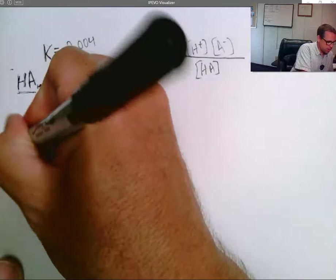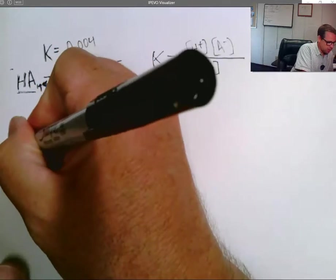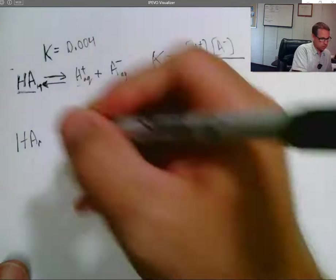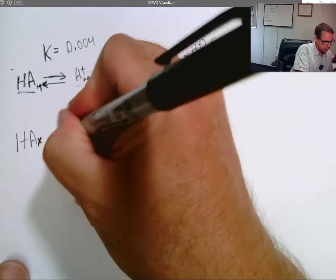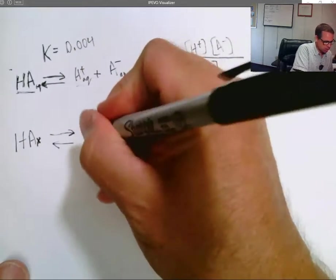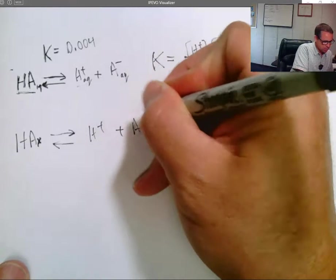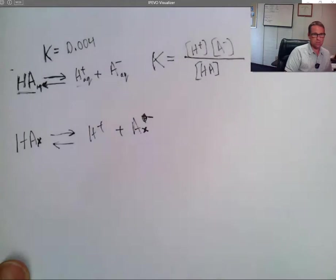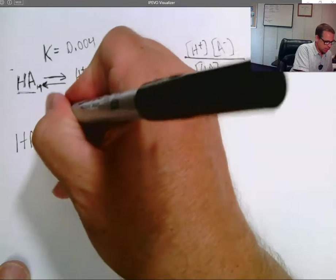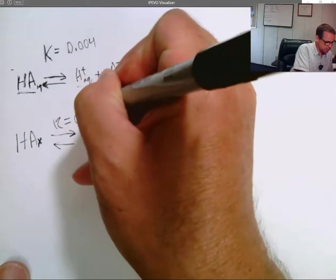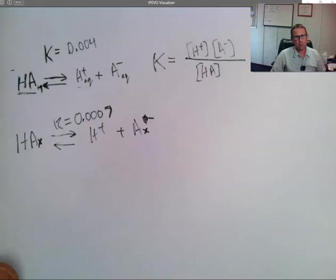So, Sarah, here's another acid. Different acid. I'll call it HAX, just to kind of let you know that it's a different acid. It dissociates into H plus and this other minus sign there. It has a K value of 0.0007.